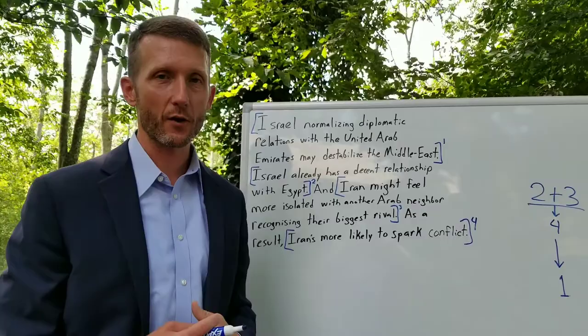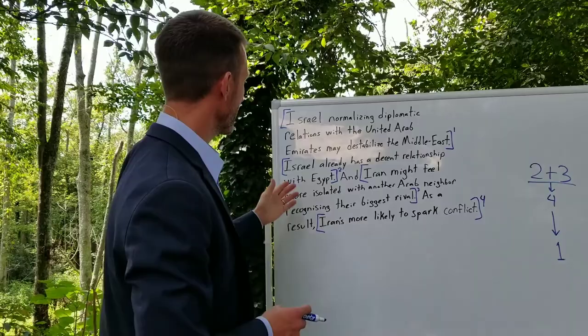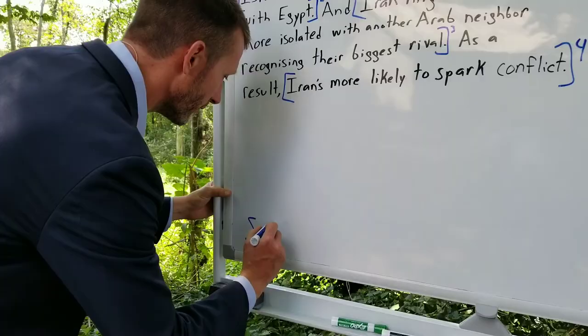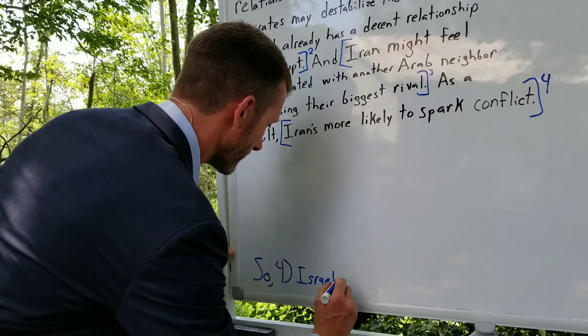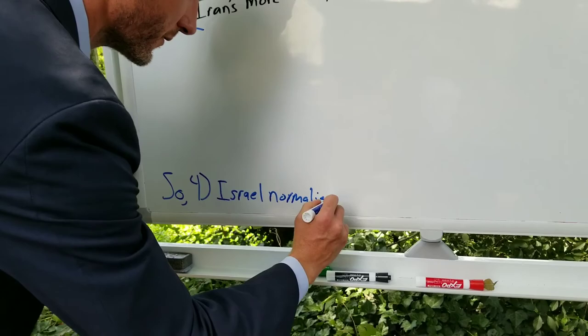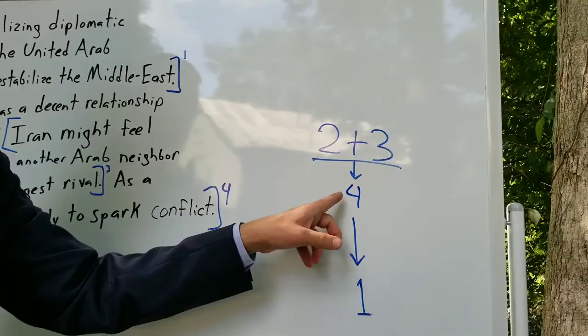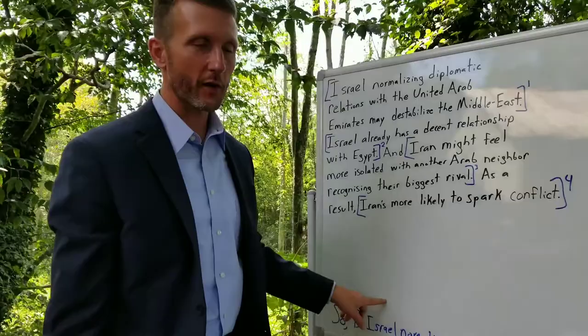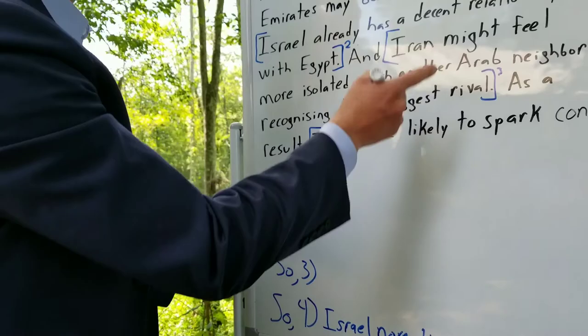Now we use this diagram to develop a well-crafted argument. Claim 1 is the conclusion, so it goes at the very bottom preceded by 'so.' Claim 4 — 'Iran's more likely to spark conflict' — is a sub-conclusion, so it also gets 'so' before it and is placed just above the ultimate conclusion. Claims 2 and 3 — 'Israel already has a decent relationship with Egypt' and 'Iran might feel more isolated with another Arab neighbor recognizing their biggest rival' — are numbered as the premises at the top.